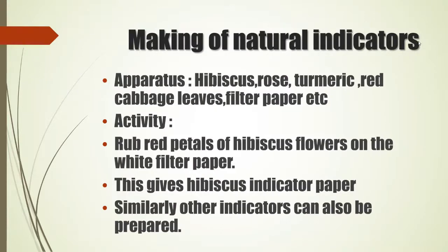The next part is making natural indicators. What are indicators? Phenolphthalein, methyl orange — these are all called indicators. When these indicators are added to any substance, the change in color will show whether the substance is acid or base. These indicators are readily available in the market, or you can see them in the laboratory. Alternatively, we can make indicators at home — those are called natural indicators.